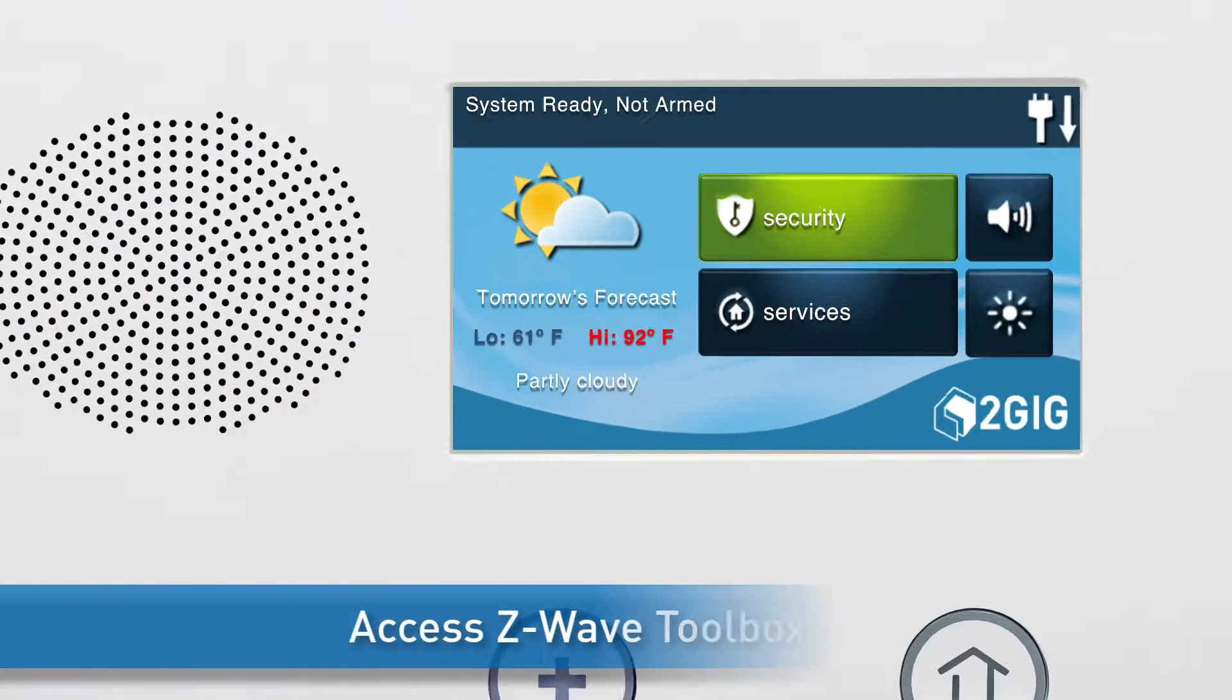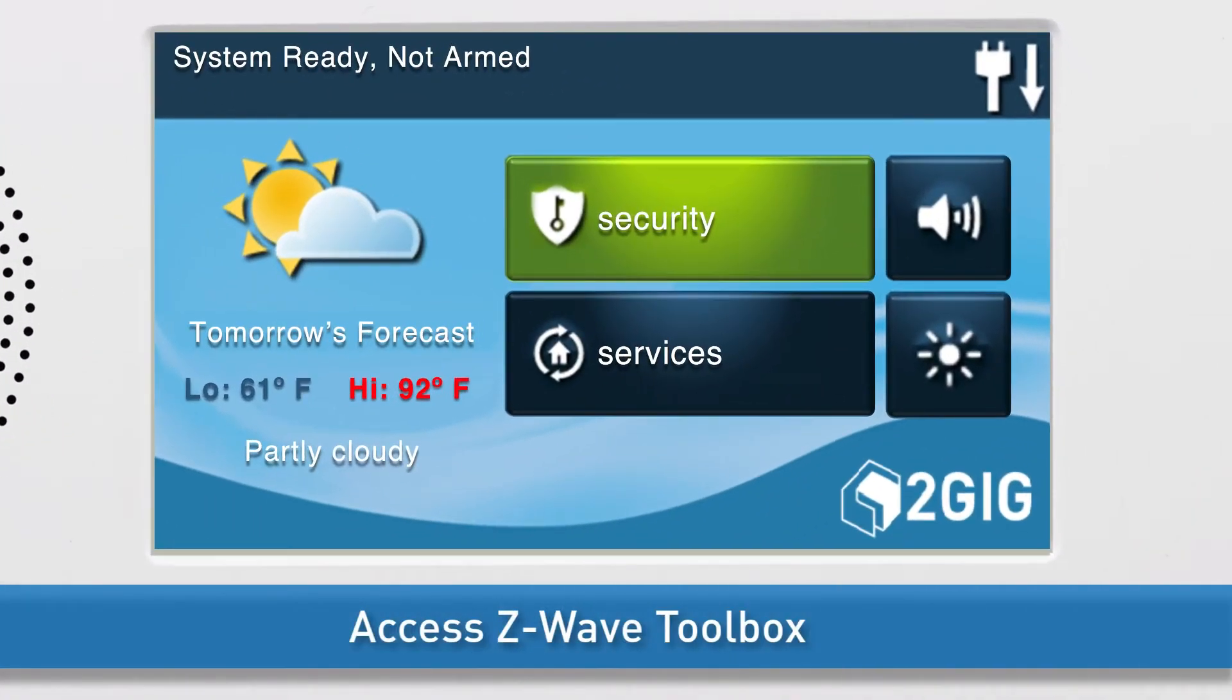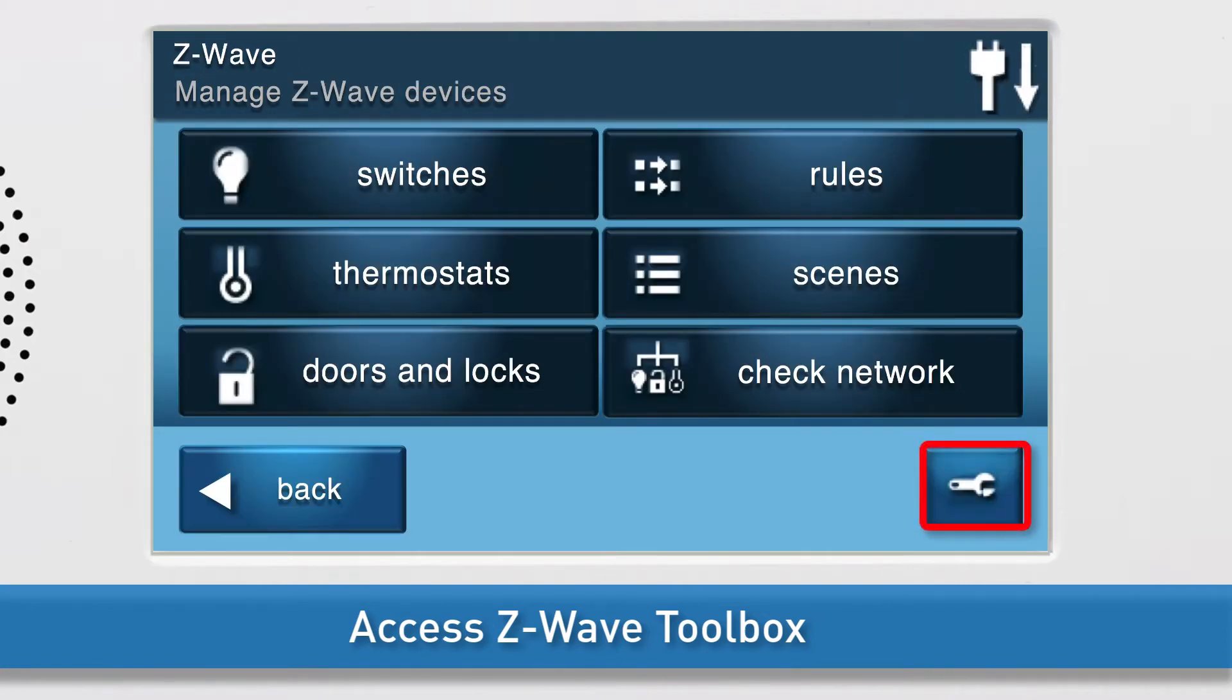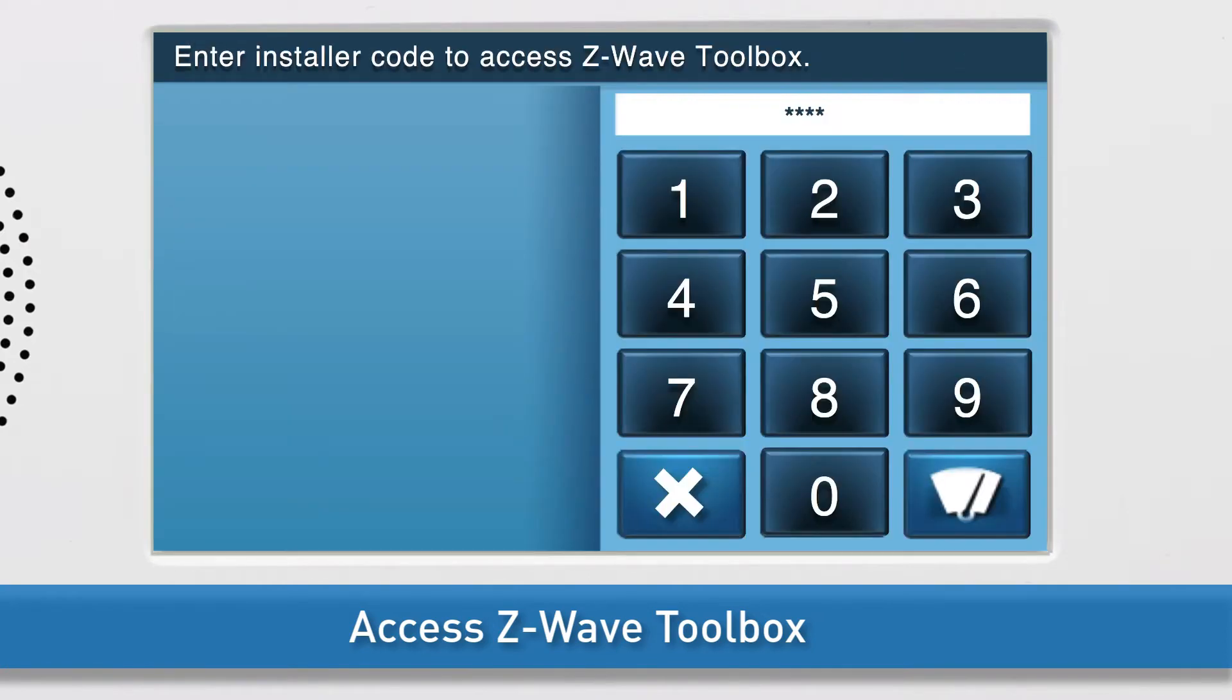Next, navigate to the GC2 Z-Wave Toolbox. Press the Services button, then press the Z-Wave button. Press the wrench icon, then enter the installer code. The default installer code for the GC2 is 1561.